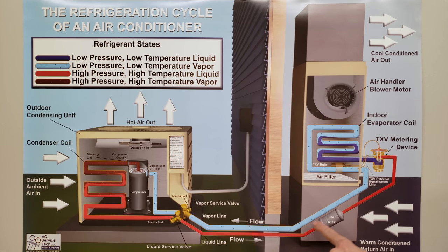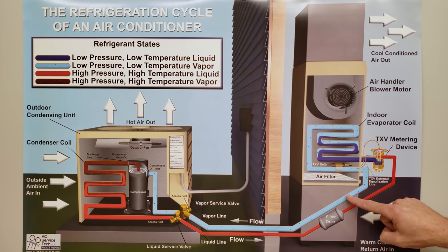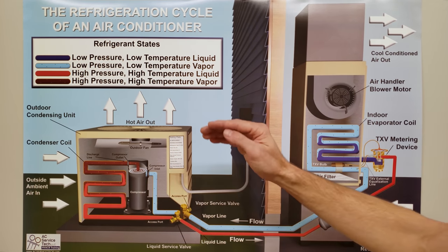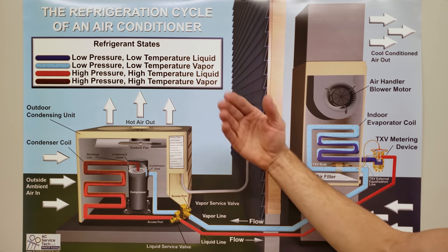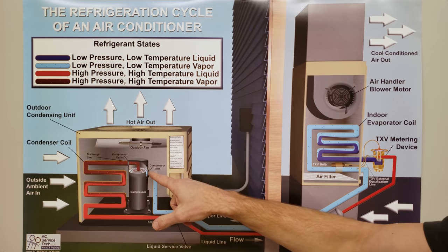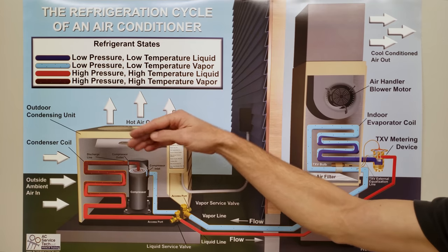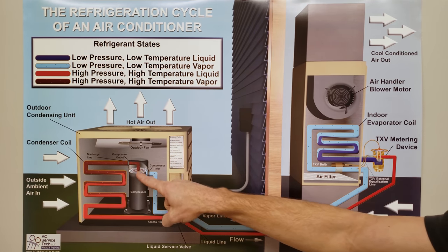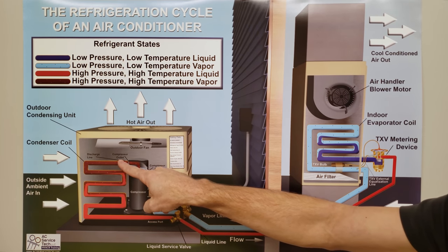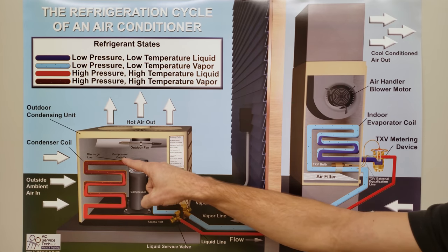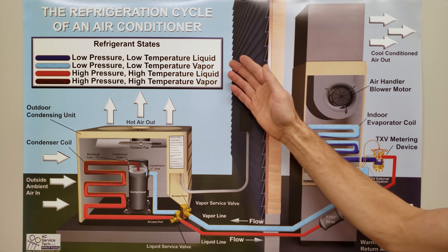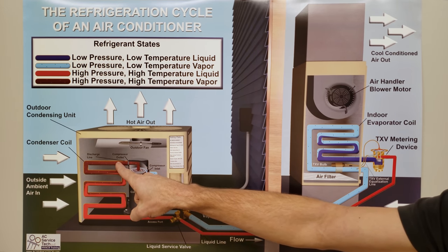The refrigerant vapor carries the absorbed heat energy to the outside in order to reject it to the outdoor air. The problem is if you only have 52°F refrigerant and the outdoor air is 90°F, you can't reject heat into hotter air. So you increase the pressure to increase the refrigerant's temperature. The compressor takes low-pressure vapor in and outputs high-pressure, high-temperature vapor — increasing pressure increases temperature — so refrigerant exiting the compressor might be around 170°F.